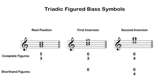When we see a chord root or Roman numeral with figured bass symbols next to it, that indicates chordal inversion. Nothing or five-three indicates root position, six or six-three indicates first inversion, and six-four indicates second inversion.